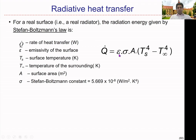Q-dot is equal to the emissivity of the surface times sigma — this is related to the surface. Black surfaces can have high emissivity values. Emissivity can change from 0 to 1; ideal black bodies can have 1. Depending on the surface conditions, other objects can have values between 0 and 1. Sigma is the Stefan-Boltzmann constant. A is the heat transfer surface area related to radiative heat transfer, in square meters. Ts is the surface temperature of the heat source emitting electromagnetic radiation, to the power of 4, and T-infinity is the temperature of the surrounding.